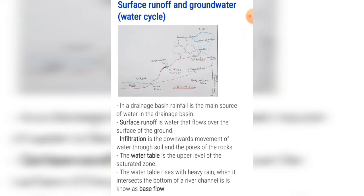The water table is the upper level of the saturated zone. The saturated zone is the part of the soil or rocks where all the pores and spaces have already been filled with water. The water table rises with heavy rain. When it intersects the bottom of a river channel, it is known as base flow.